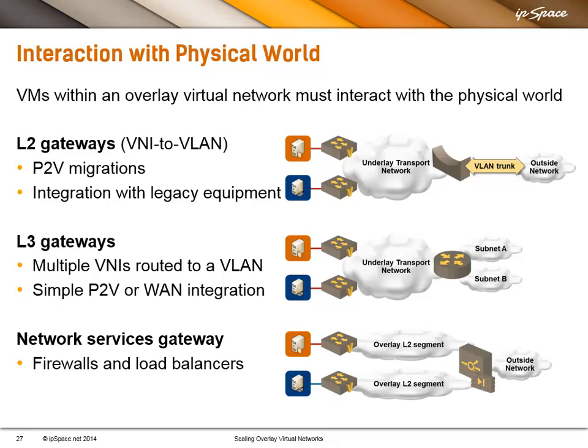Overlay Virtual Networks are a great idea, but somehow all the clients are still on the physical network, which means we have to link the virtual world with the physical world. There might be three ways of doing that. Sometimes you may need Layer 2 gateways — usually for integration with legacy equipment like physical firewalls or load balancers that only support VLAN trunks, or when doing physical to virtual migration.